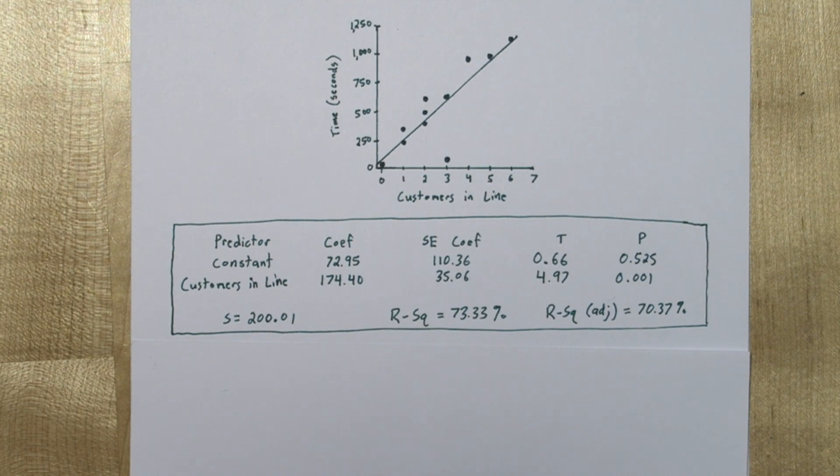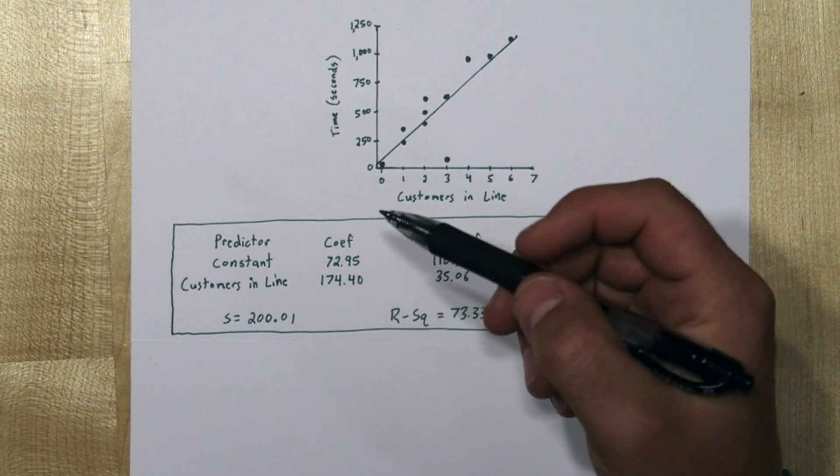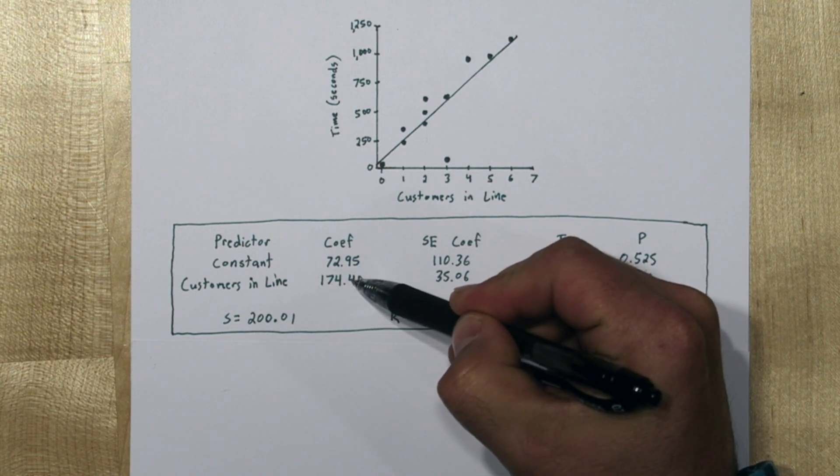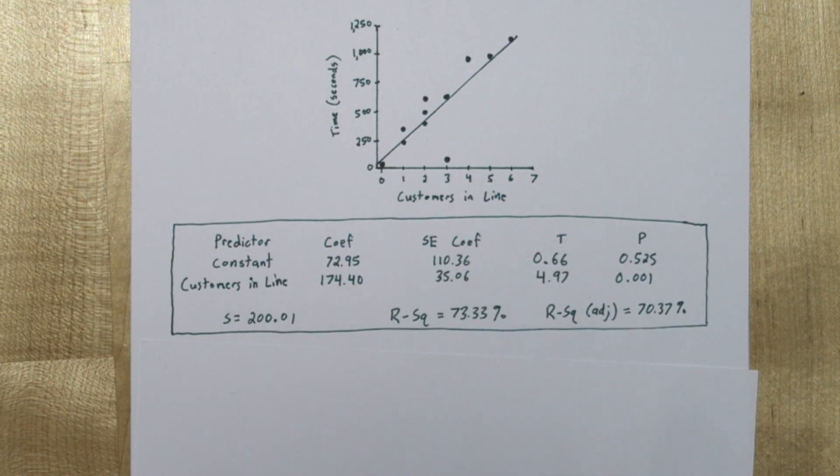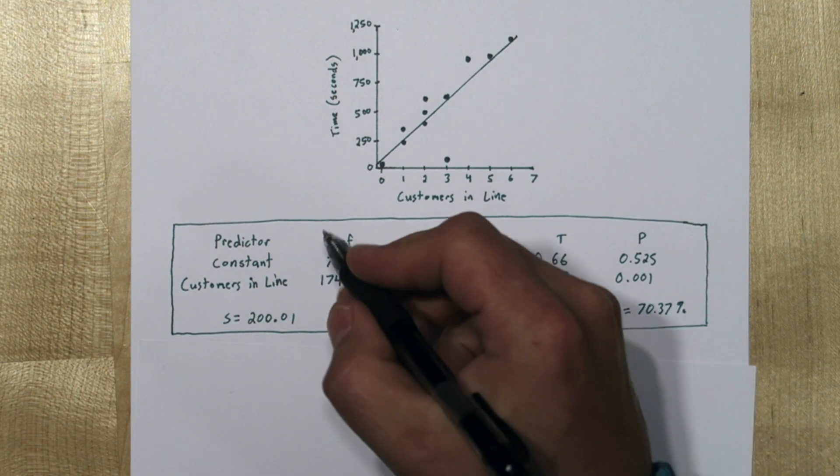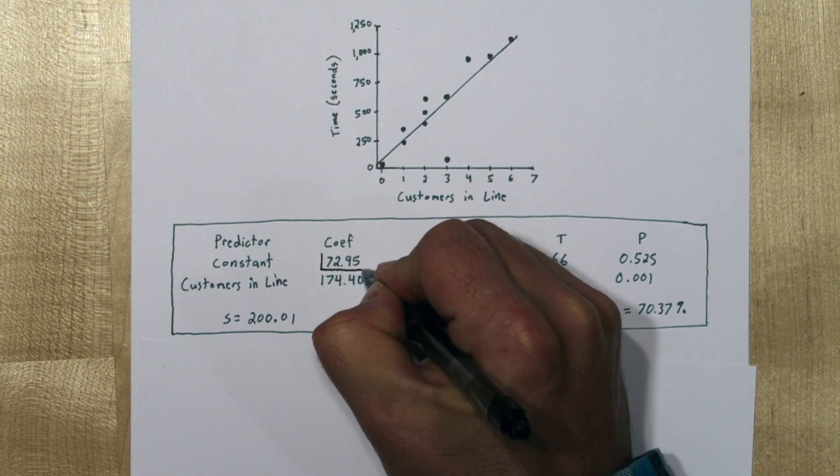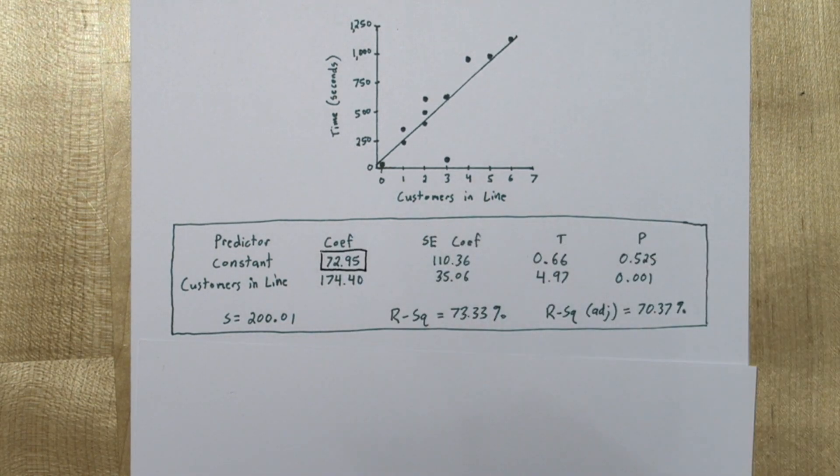In part A, we're supposed to interpret the y-intercept in context. So looking at the computer output here, we have the slope, that's right here next to customers in line, and we have the constant. So this is the y-intercept, this 72.95.